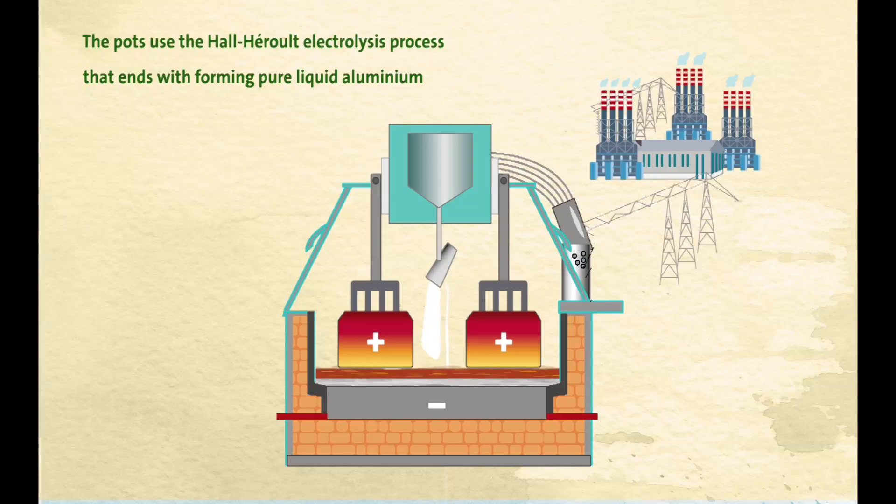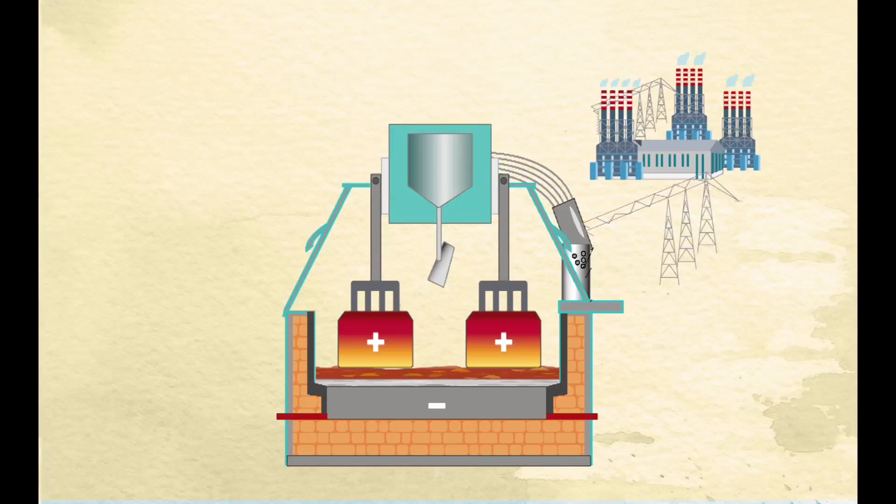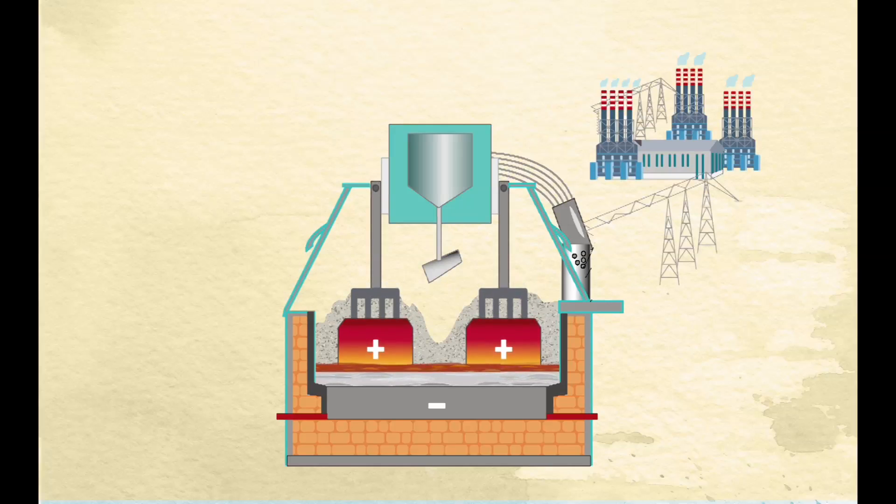The pots use the Hall-Héroult electrolysis process, whereby alumina crystals are dissolved in molten cryolite at a temperature of 960 to 970 degrees Celsius to form an electrolyte solution that will conduct electricity from the carbon rods to the carbon-lined bed of the pot. A direct current is passed through the solution. The resulting reaction breaks the bonds between the aluminium and oxygen atoms in the alumina molecules, forming pure liquid aluminium.